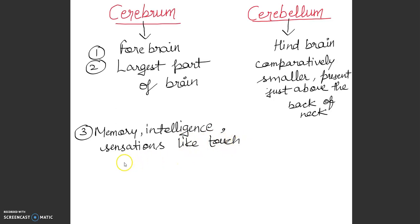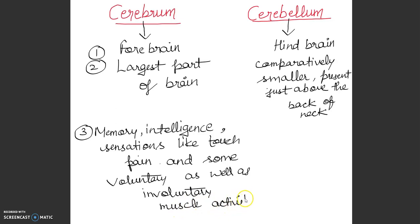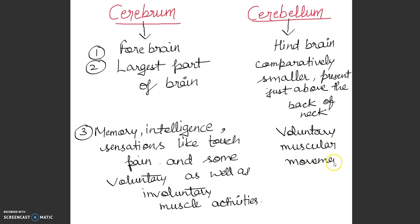Some voluntary as well as involuntary muscular activities are associated with the brain. Cerebellum is associated with voluntary muscular movements, body balancing, posture, and maintenance of equilibrium.